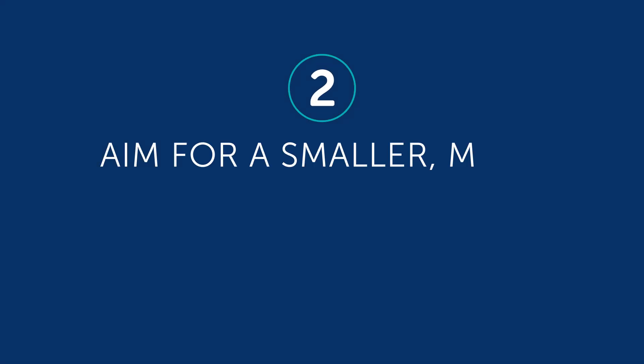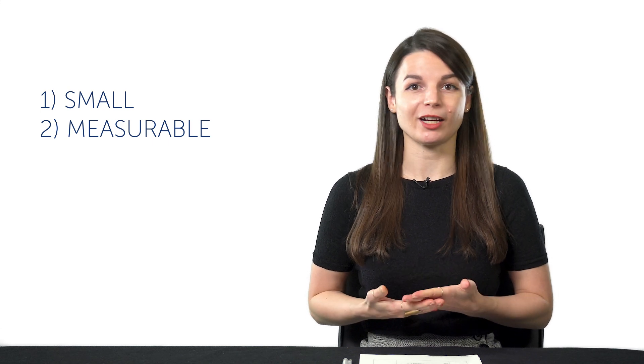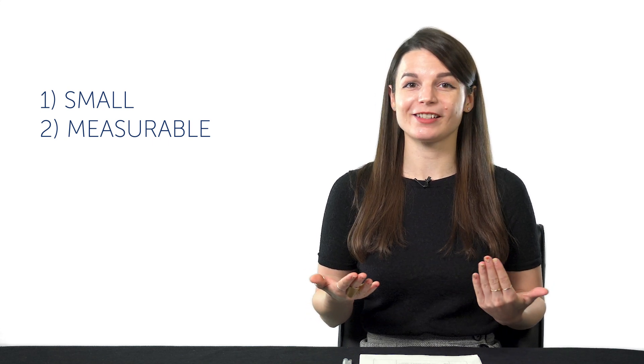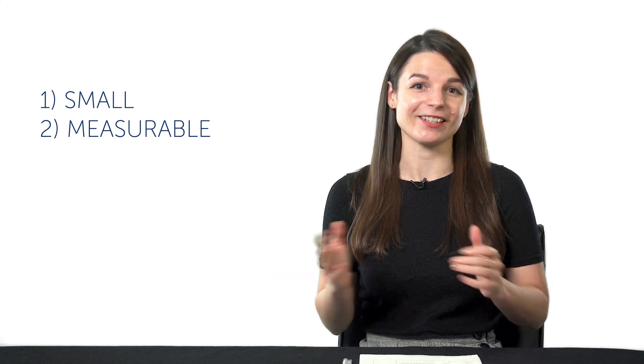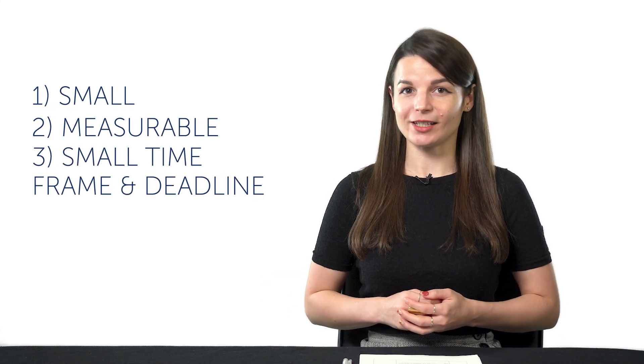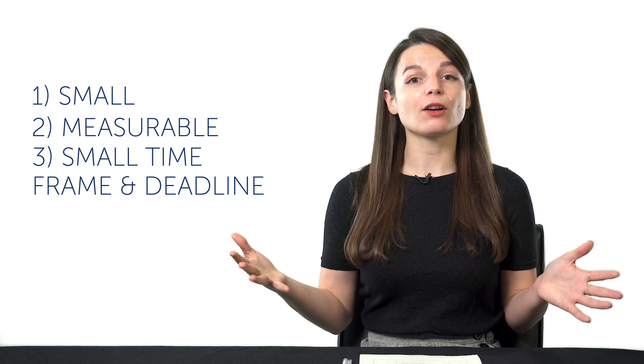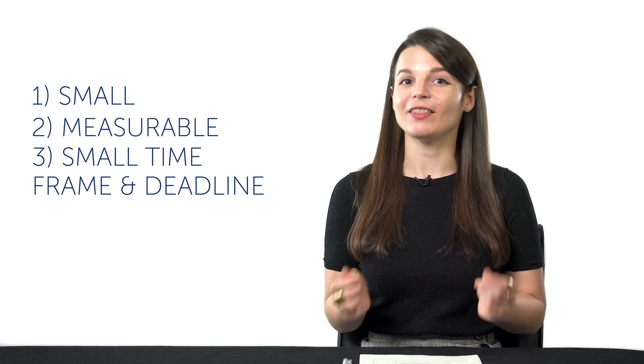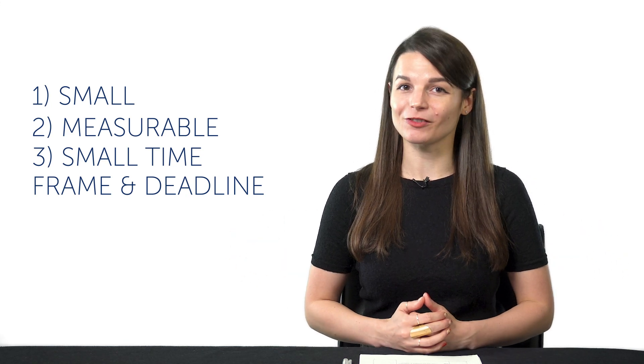Two, aim for a smaller, more realistic goal. With that last goal in mind, think about how you might make a new, easier goal. Remember, your goal should always be: one, small; two, measurable — for example, one minute of conversation, 100 words, 10 grammar rules, 10 lessons, etc.; and three, have a small timeframe with a deadline. In other words, it's a goal for the week or for the month, and the deadline is January 31st, for example.